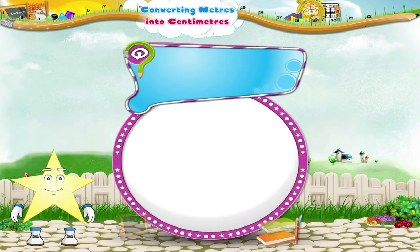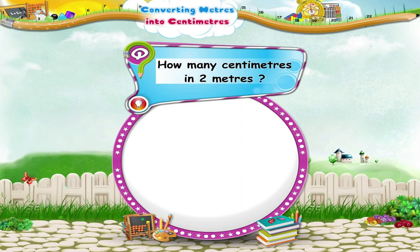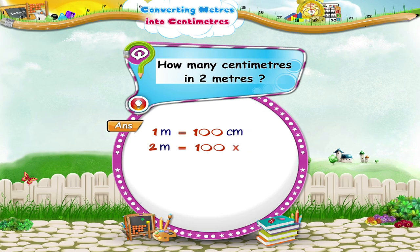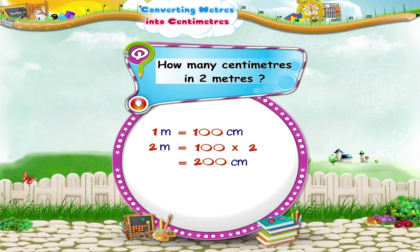Now Starry, if 1 meter has 100 centimeters, how many centimeters in 2 meters? Let us find it together. 1 meter equals 100 centimeters. So 2 meters equals 100 into 2, which equals 200 centimeters. Now help me with this.